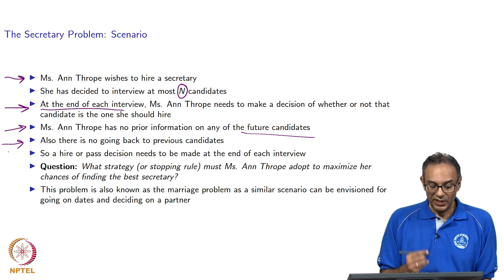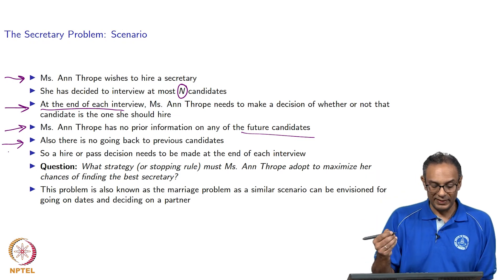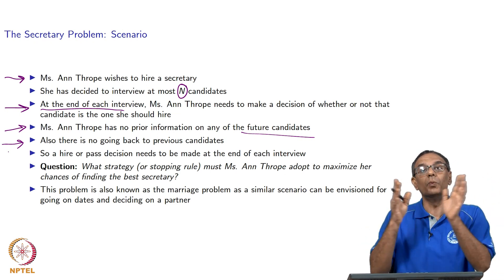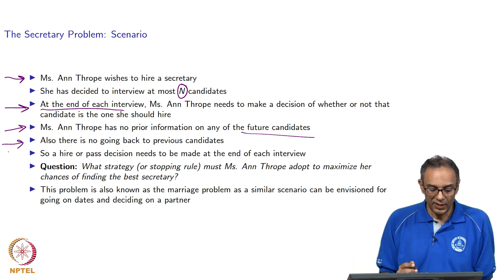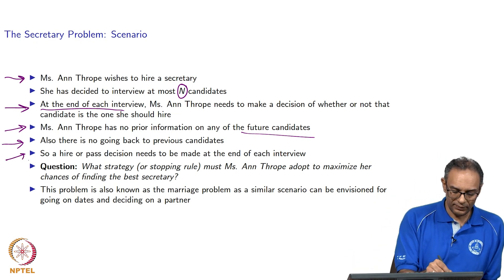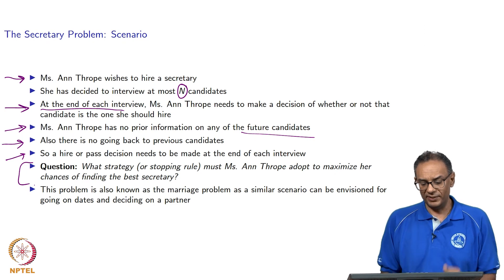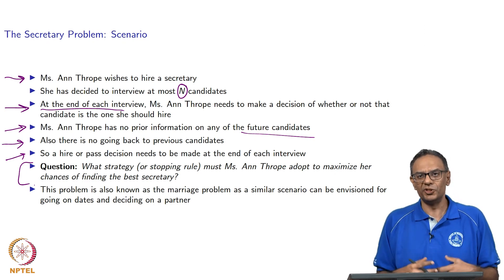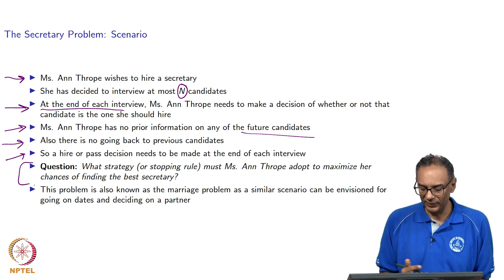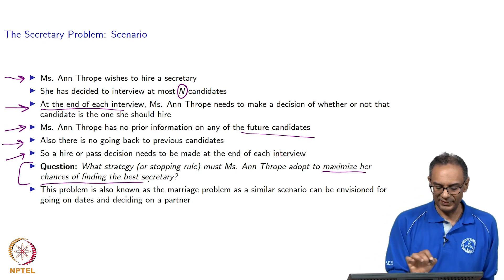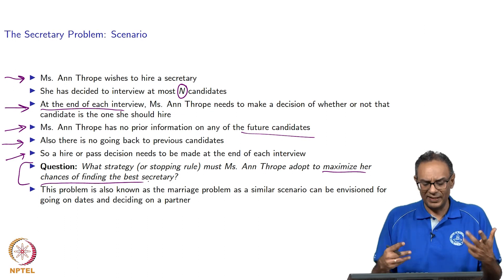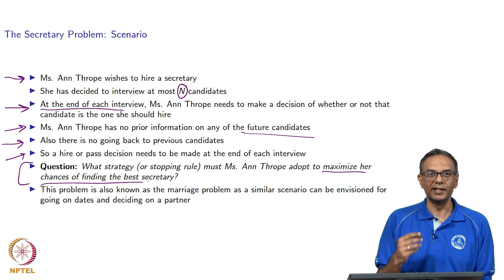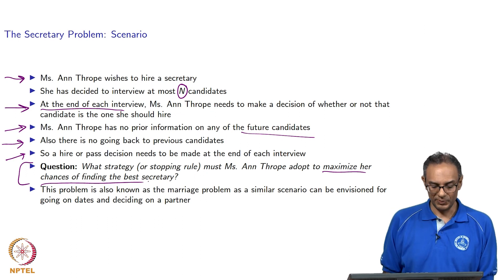What she needs to do is interview someone and decide to hire them or to pass them. If they pass, that person is gone and we move to the next person. So the main question is: what strategy, or what stopping rule — meaning when should she stop interviewing — so that she maximizes her chances of finding the best secretary? That is the objective: to find the best secretary possible.